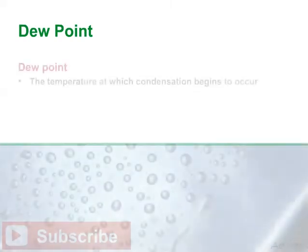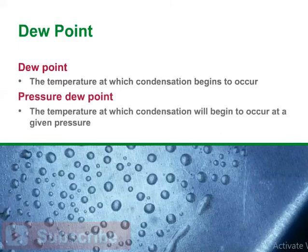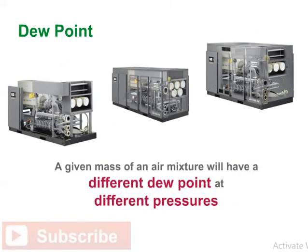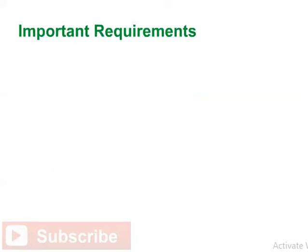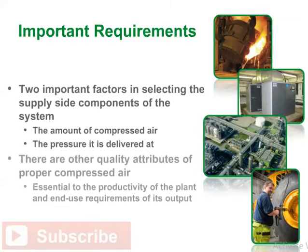Dew point is the temperature at which condensation begins to occur. Pressure dew point is the temperature at which condensation will begin to occur at a given pressure. A given mass of air mixture will have a different dew point at different pressures. The amount of compressed air and the pressure at which it is delivered are two important factors in selecting the supply side components of the system. However, there are other quality attributes of proper compressed air which are essential to the productivity of the plant and end use requirements.